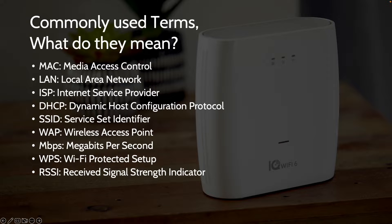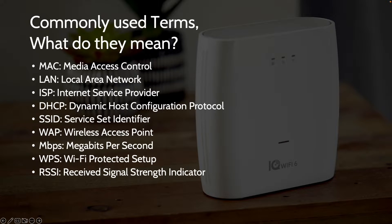RSSI, or Received Signal Strength Indicator, is a measurement between wireless devices. Sometimes we refer to this indicator as signal-to-noise ratio. This measurement can be displayed as a percentage and will likely be shown as a negative dBm number. A good RSSI value is somewhere between negative 45 dBm to negative 60 dBm.